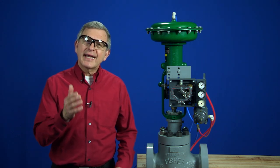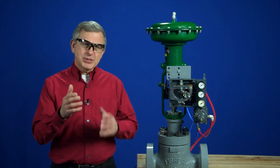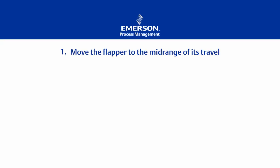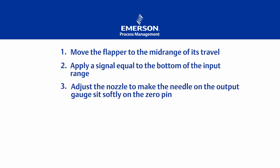So we can calibrate the 3582 positioner in just six easy steps. Step one, move the flapper to the mid-range of its travel. Step two, apply a signal equal to the bottom of the input range. Step three, adjust the nozzle to make the needle on the output gauge sit softly on the zero pin.